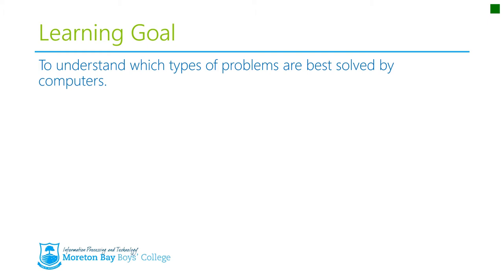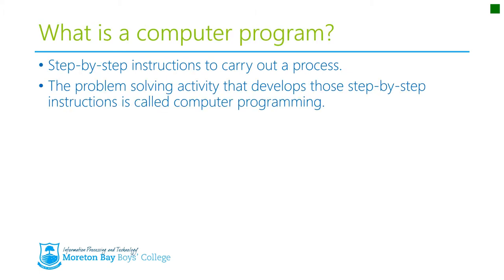The learning goal for this activity is to understand which types of problems are best solved by computers, and we'll do that by going through and looking at the types of problems and those which are more acceptable for computer use. It's probably best to start with the question: what is a computer program, to understand what kind of problem they can actually solve.